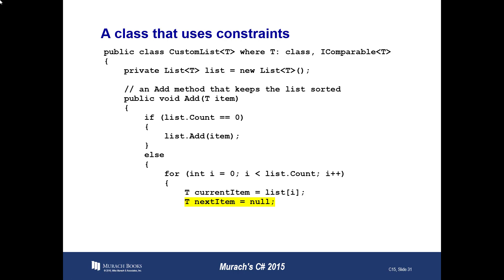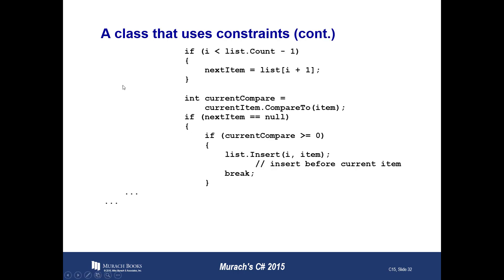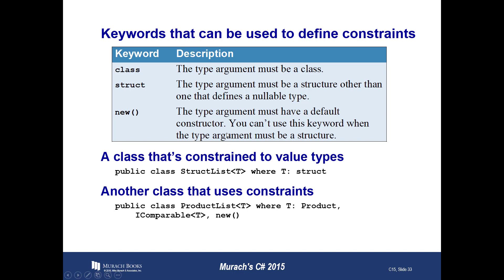When you define a generic class, you can set constraints to restrict the data types that your generic class accepts. The keywords you can use are: class, which means whatever you pass in must be a class; struct, where it must be a structure; and new, which means it must have a default constructor. You can't use the new keyword with structures — it only works with classes.